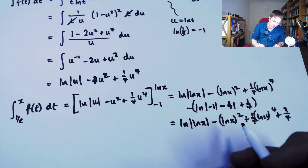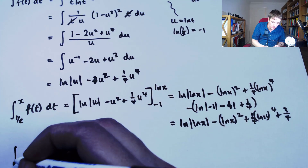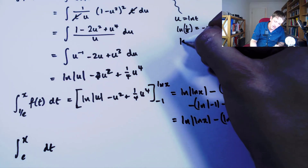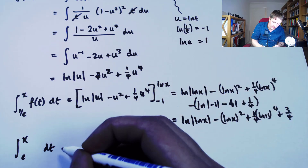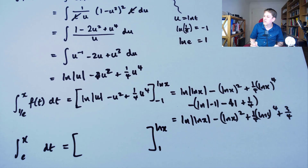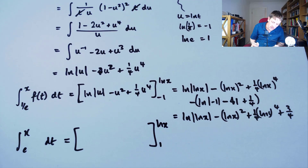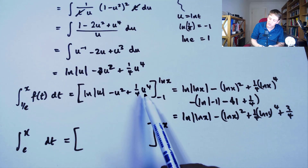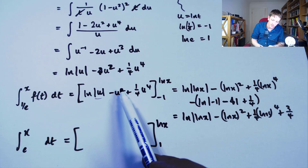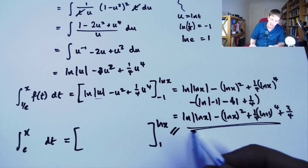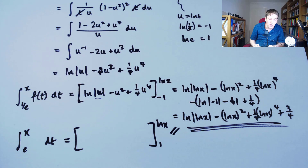For the integral between e and x, when t = e the lower limit becomes log e = 1, so I'm integrating from 1 to log x. Substituting 1 gives the same numerical value as substituting −1, because of the modulus, the square, and the fourth power — so the functional form is exactly the same in both cases. We get the same expression regardless of which piece of the definition we use.